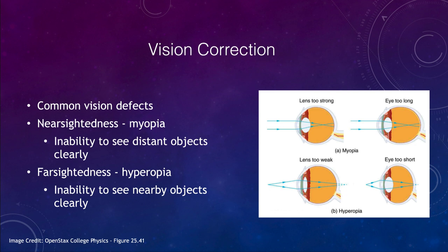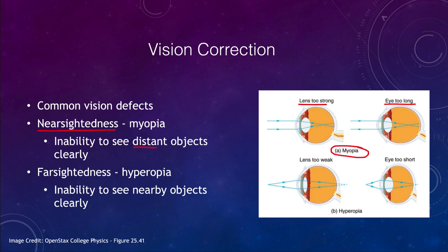We also have defects with vision, as many who wear glasses or contacts will know. You can have cases where your lens is simply too strong, or your eye is too long, which results in myopia. Myopia is also called nearsightedness — the inability to see distant objects clearly. Someone who is nearsighted can see things nearby but cannot see distant objects clearly, and will need some kind of correction.